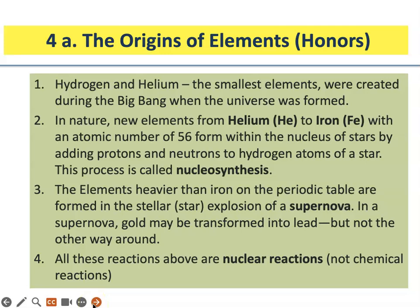This is for honors students only. Let's look at how all the elements came to be. Hydrogen and helium are the smallest elements. Hydrogen was the first to be created by the Big Bang when the universe was formed. Two hydrogen atoms fuse together to make helium, which has a mass of 2, while hydrogen has a mass of 1. Every other element until iron, which has an atomic number — number of protons — equal to 56, was made by fusions of hydrogen and helium inside the center, the nucleus, of stars.